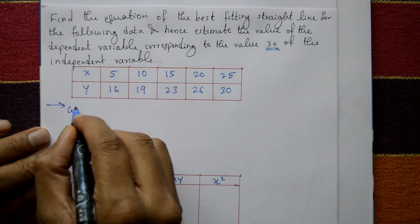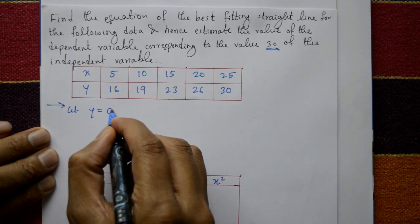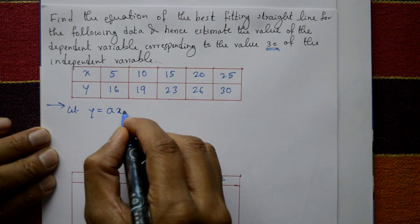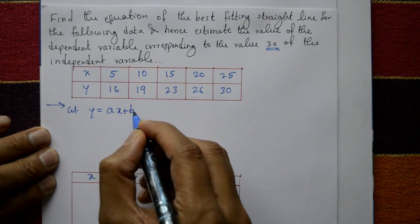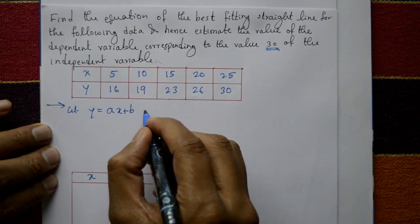Let y is equal to ax plus b — this is the equation of the best fitting straight line.